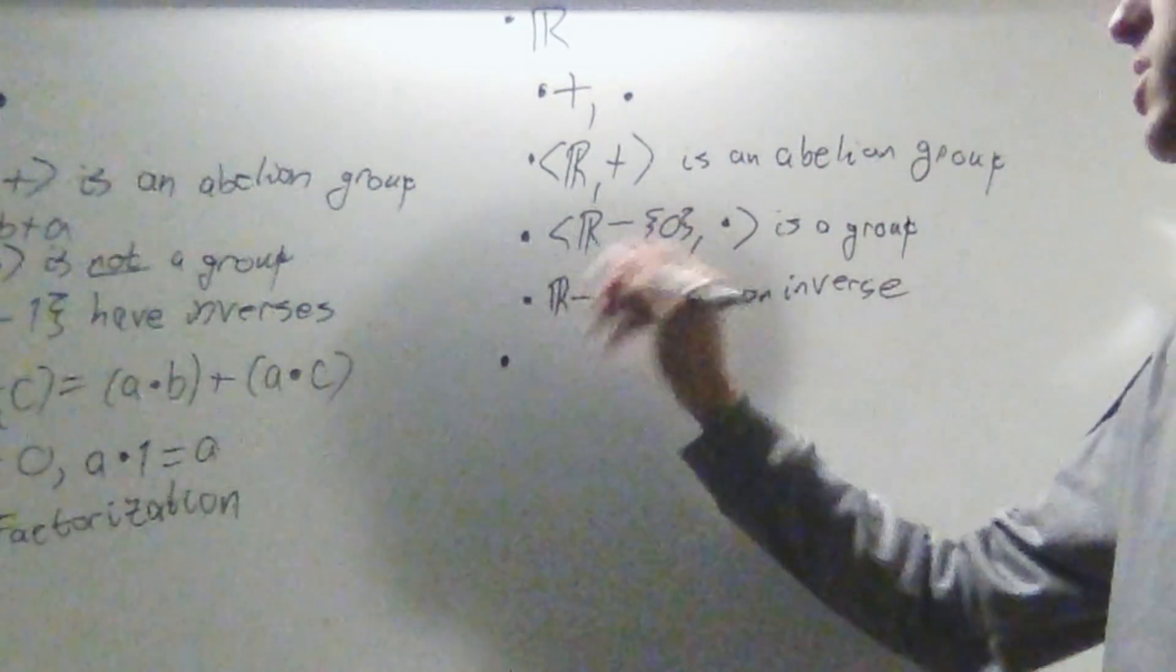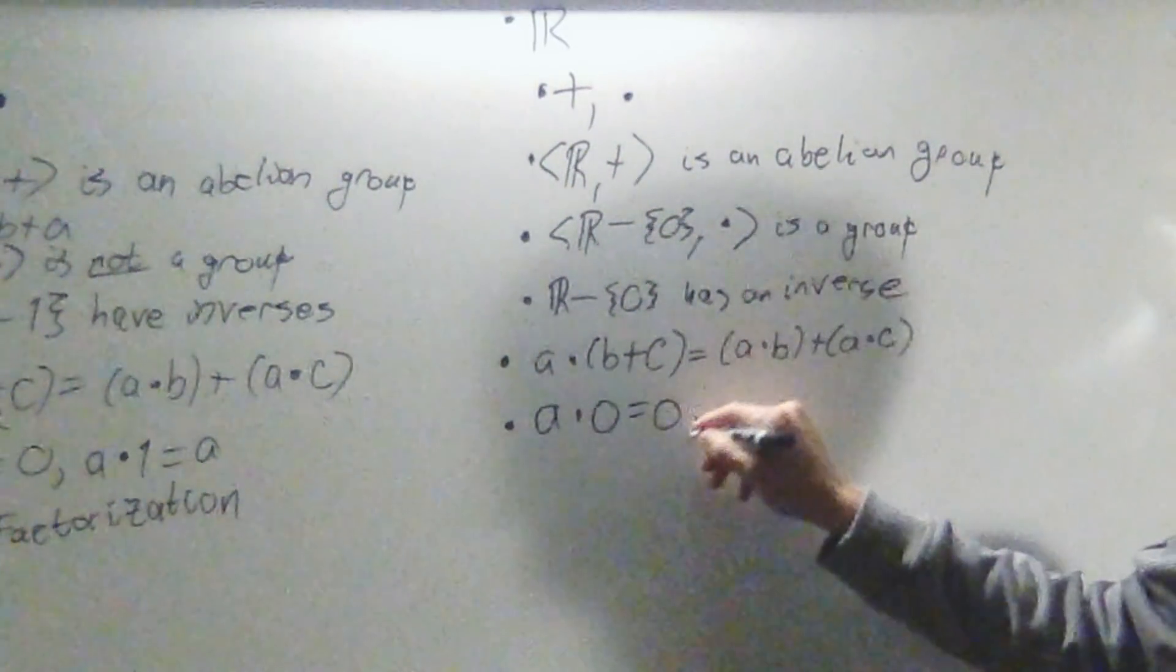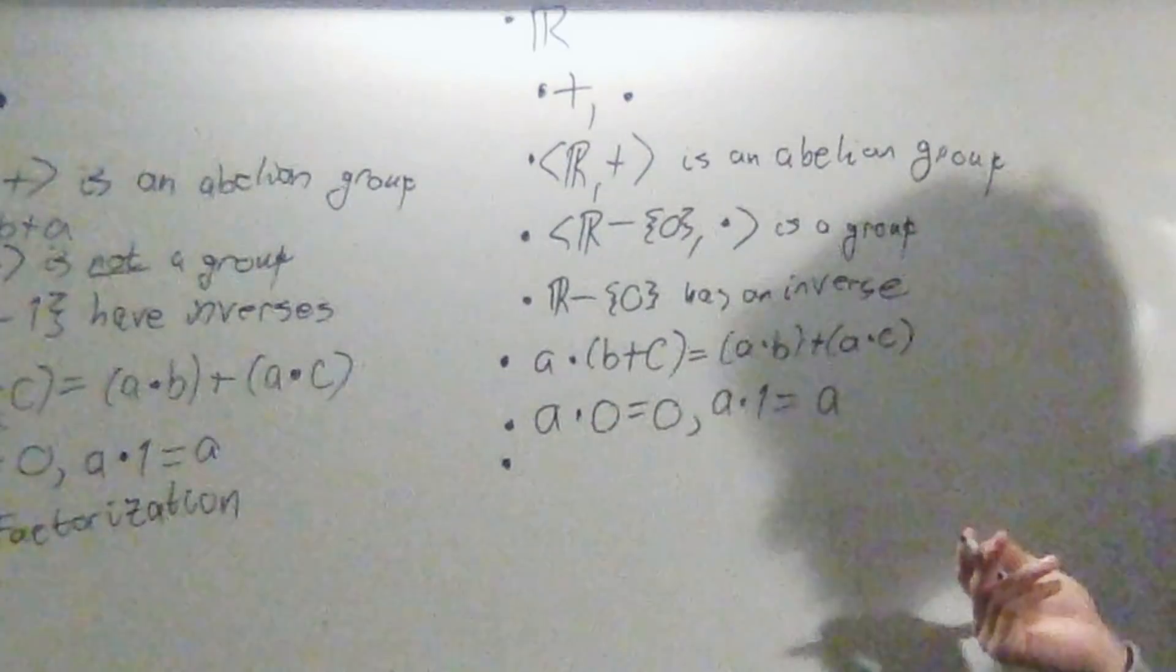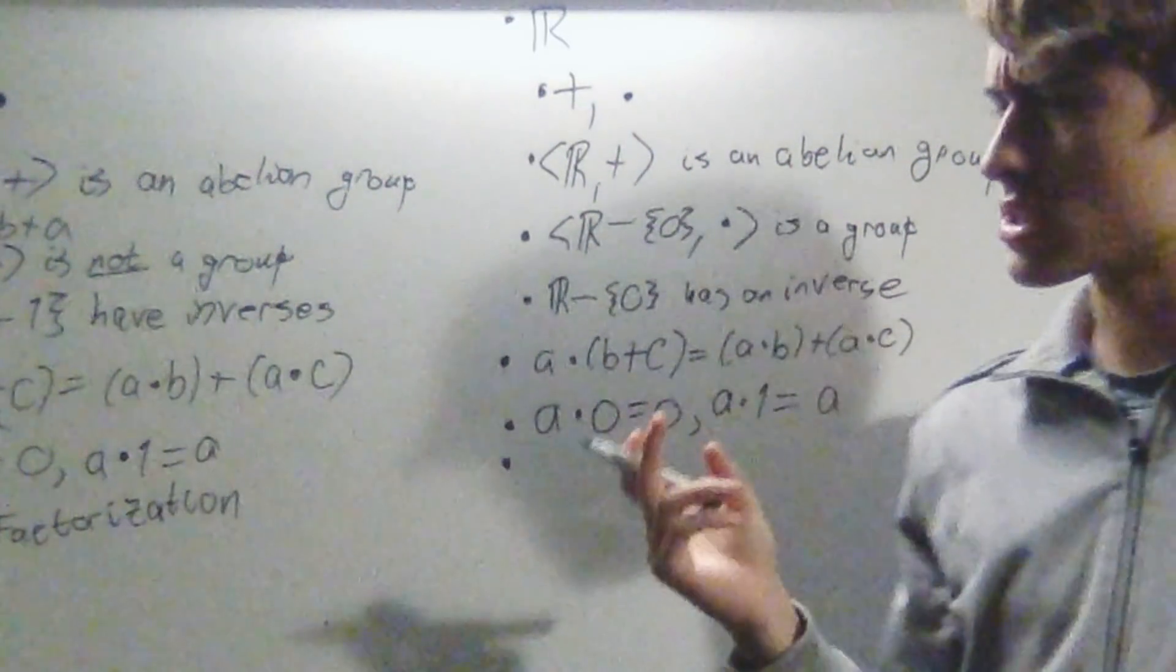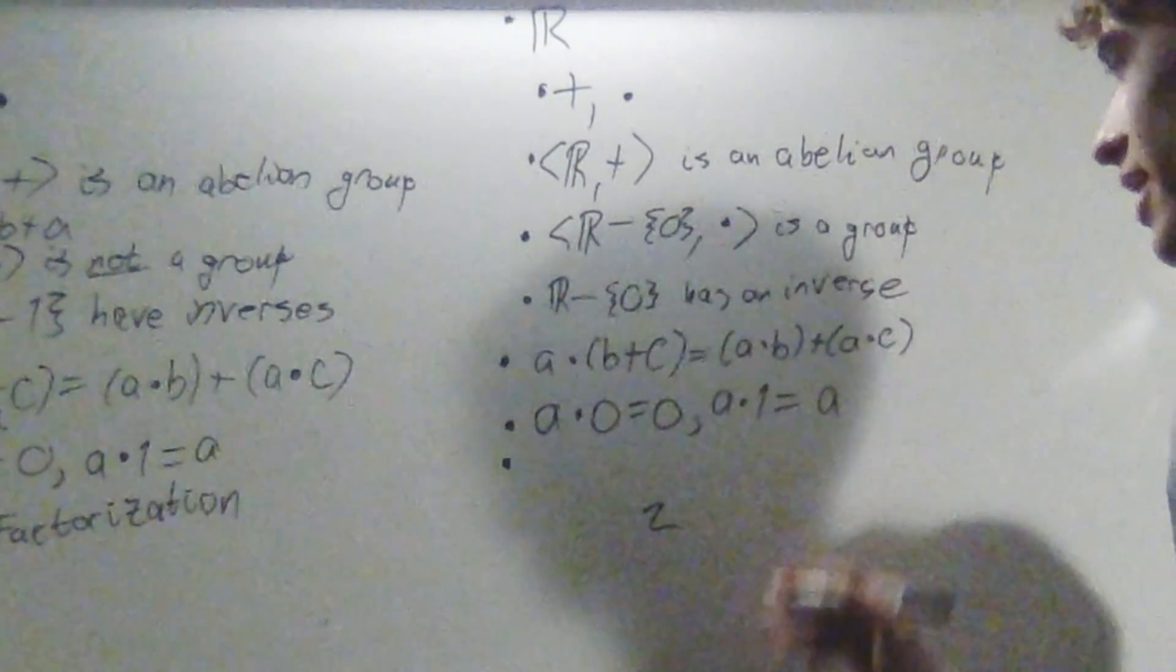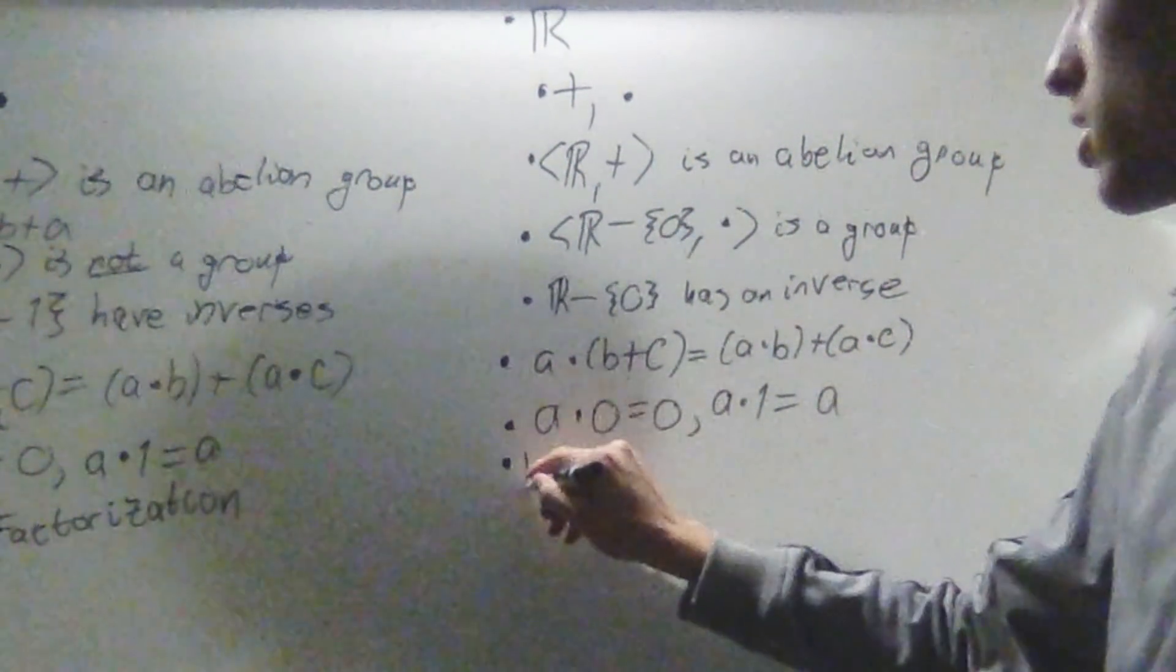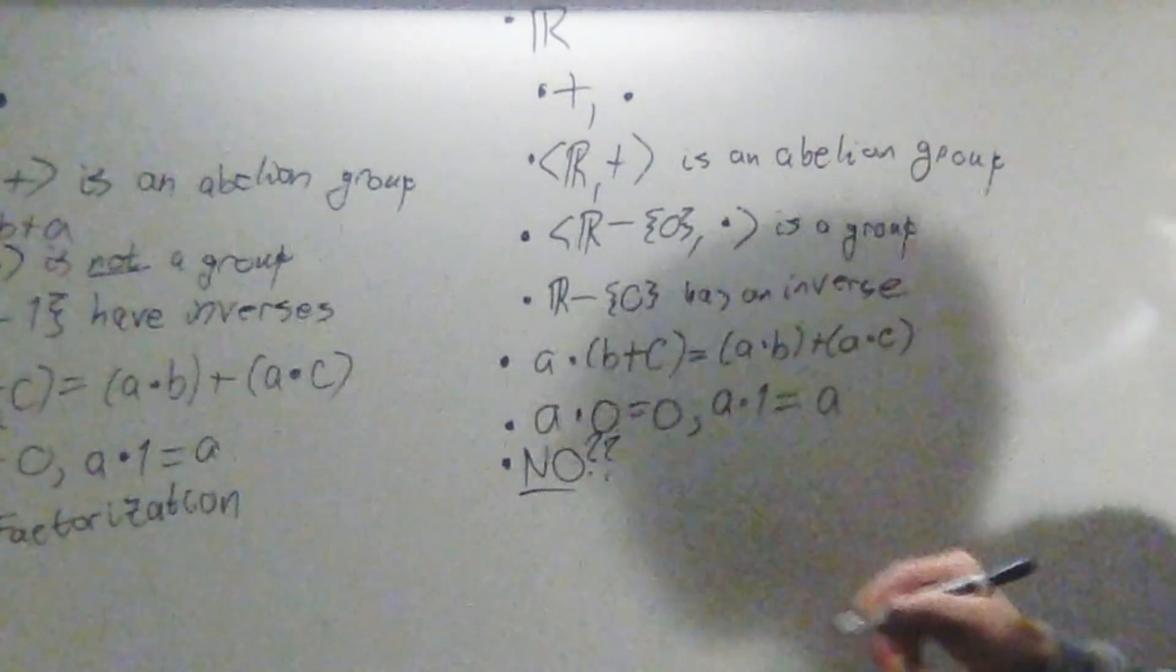The next thing is the distributive property, which it does have. And the next property, a times 0 is going to be 0, and a times 1 is going to equal a. That is also true in here. What about unique factorization? Well, in the real numbers, do we really have a concept of unique factorization? Not really, because there's no primes. Primes are things that are not divisible by anything besides itself and 1. But in R, that is never true, because 2 is divisible by 2.5, it's divisible by pi. So unique factorization doesn't really have a concept, so no unique factorization for now.